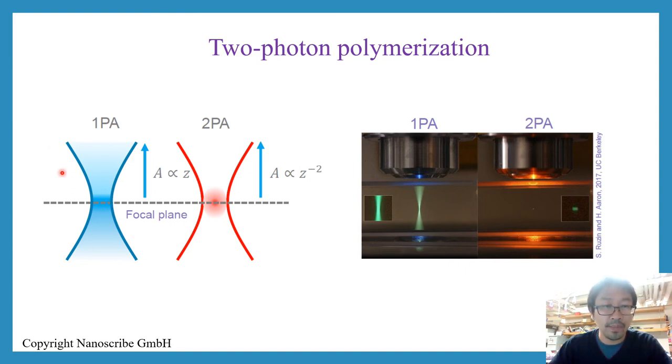However, if you switch from linear to non-linear process, your volume, your smallest cured part of the resin, is much smaller. It's only limited to this little sphere here.